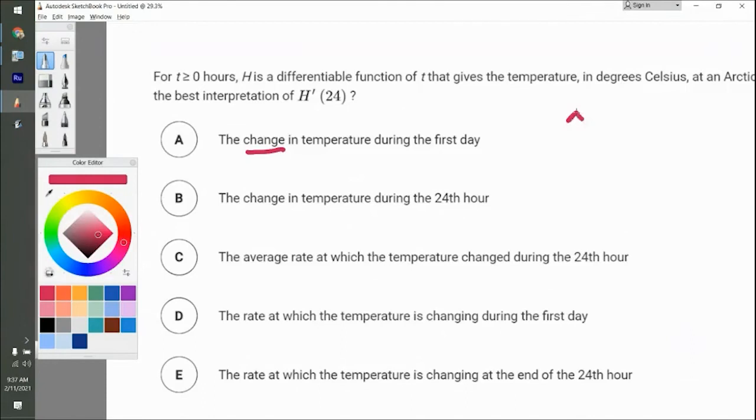For example, if you did like change in Y over change in X, this is the rate at which these things are changing. If you wanted just the change, it would just be change in Y. So that's the sign right there that it's not going to be these two.